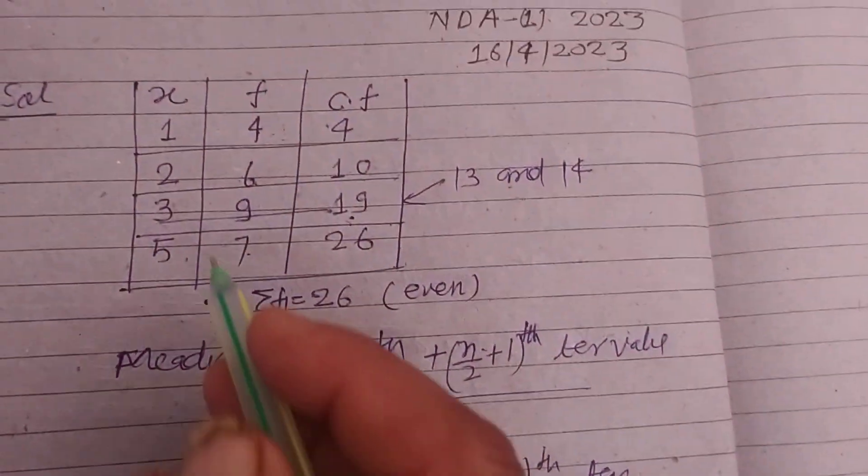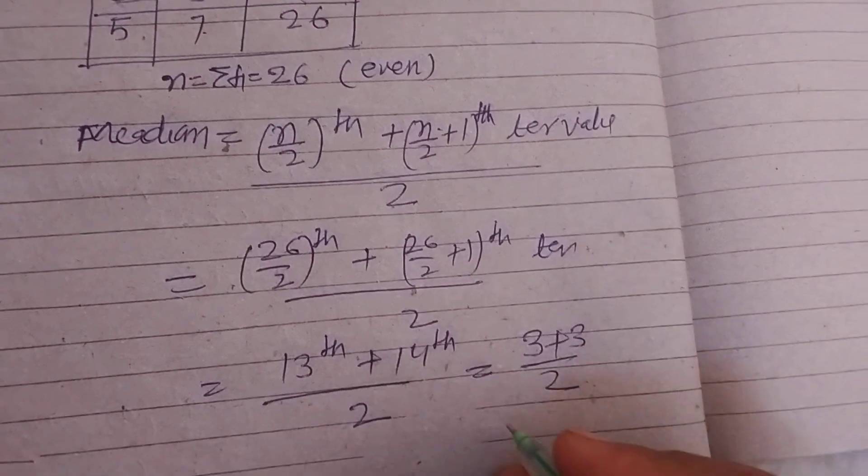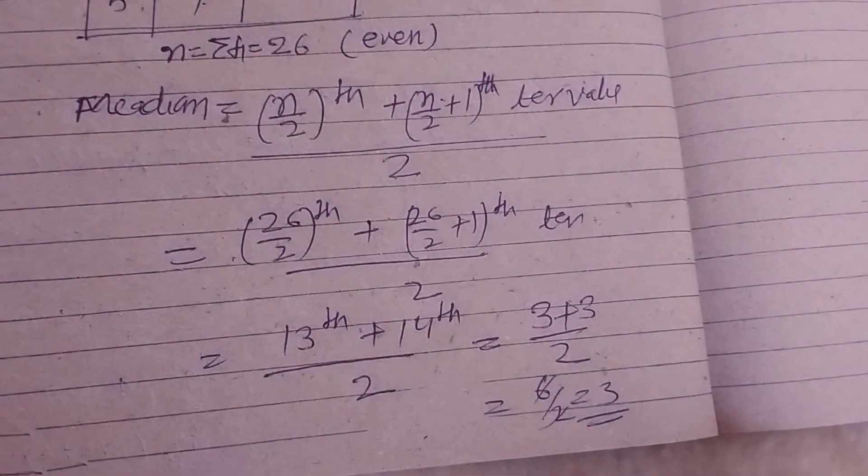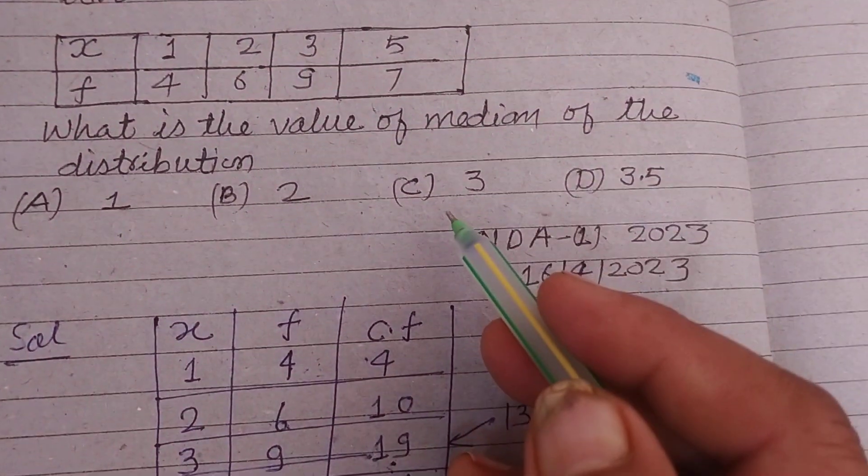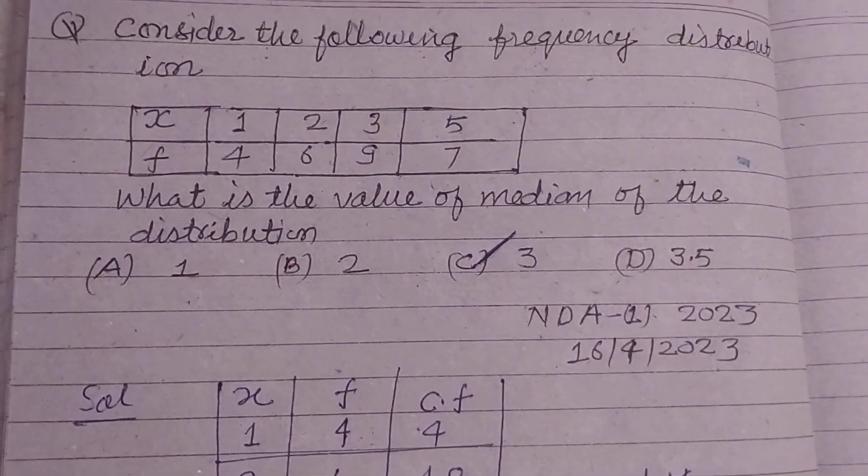So 3 plus 3 divided by 2 equals 6 divided by 2 equals 3. Therefore, the median of this frequency distribution is 3, which is found in option C.